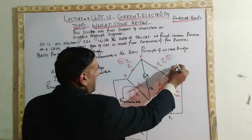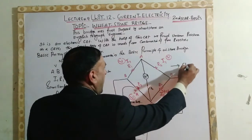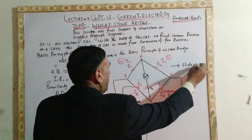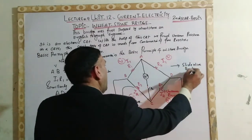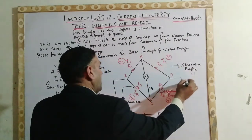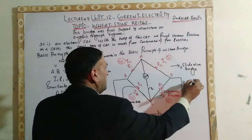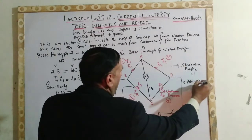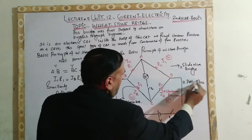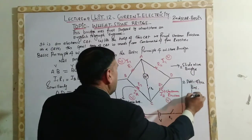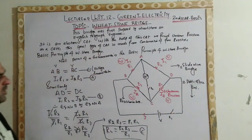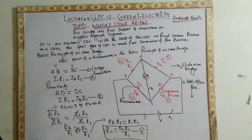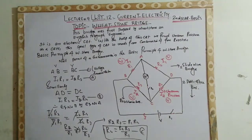Galvanometer ki needle zero pe aajayegi — so that is the basic principle of null point of galvanometer. Aapka R3 yahan se malum ho jaayega, formula mein put karain to exactly unknown resistance malum ho jaayega. Daily life mein iska practical example: first one is slide wire bridge — experimentally aap isse non-resistance malum kar saktay hain. Second one is post office box. Slide wire bridge aur post office box Wheatstone Bridge ki practical applications hain. Thank you students.